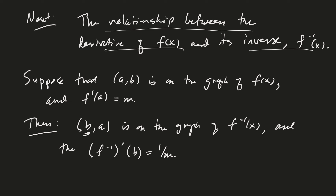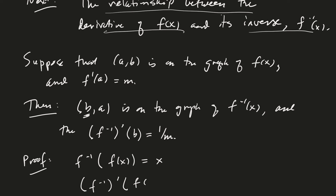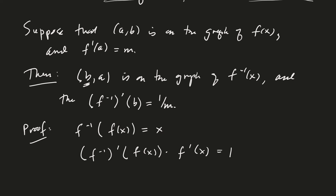So it's going to be the reciprocal. Now let's prove that. We know that for a function and its inverse, the composition of the two functions equals x. If we differentiate both sides, that gives us the derivative of the outside function with the inside function plugged in, times the derivative of the inside function, equal to 1. So the derivative of the inverse evaluated at f(x) equals 1 over f'(x).